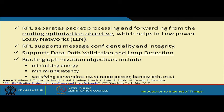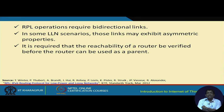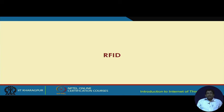The overall optimization objectives of RPL routing include minimizing energy, minimizing latency, and satisfying constraints with respect to node power and bandwidth. RPL operates using bidirectional links. In some lossy network scenarios, these links may exhibit asymmetric properties — meaning the forward and return paths may differ due to environmental conditions. Therefore, the reachability of a router must be verified before it can be used as a parent.